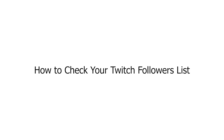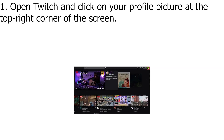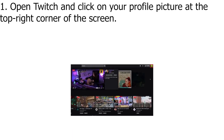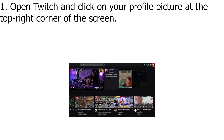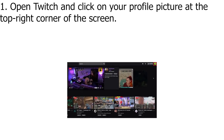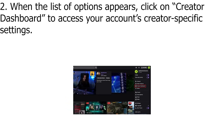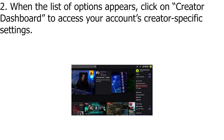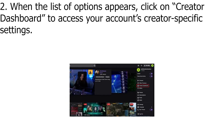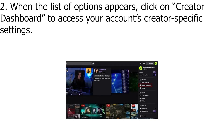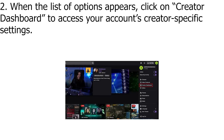How to Check Your Twitch Followers List. Open Twitch and click on your profile picture at the top right corner of the screen. From the left sidebar, click on Followers List to see a list of your followers on Twitch.